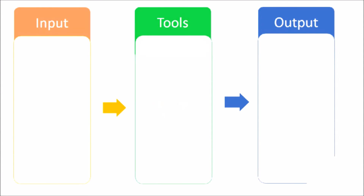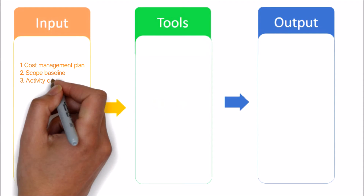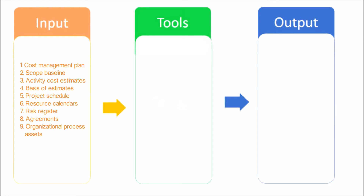Let's see the inputs, tools and techniques, and outputs of the Determine Budget process. The inputs include: Cost Management Plan, which describes how the project costs will be managed and controlled; Scope Baseline; Activity Cost Estimates, where cost estimates for each activity within a work package are aggregated to obtain a cost estimate for each work package; and Basis of Estimates, where supporting detail for cost estimates should specify any basic assumptions dealing with the inclusion or exclusion of indirect or other costs in the project budget.